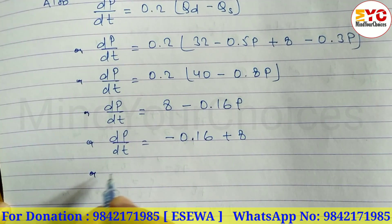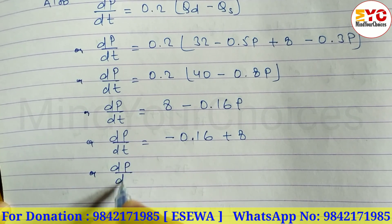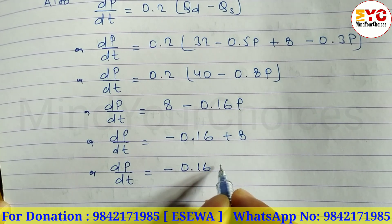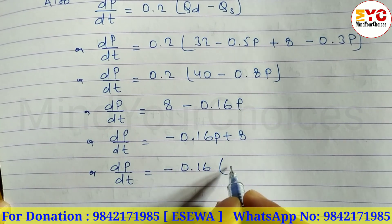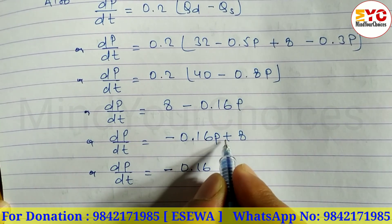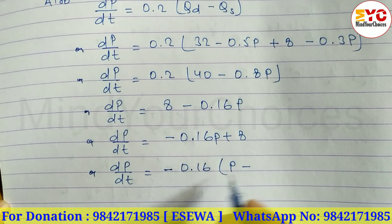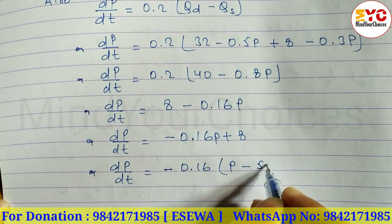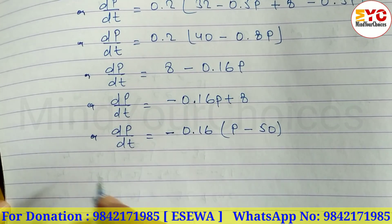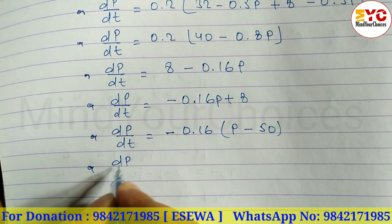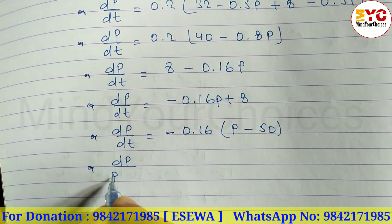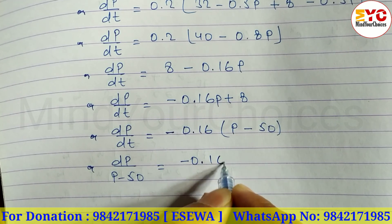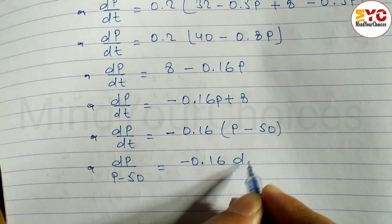We take common factor negative 0.16: dp/dt equals negative 0.16 times (p minus 50). Separating variables, we divide both sides to get dp divided by (p minus 50) equals negative 0.16 dt.